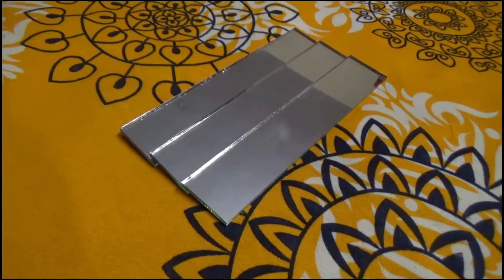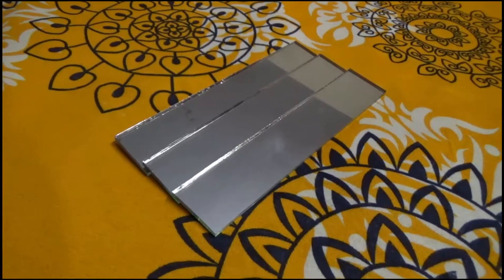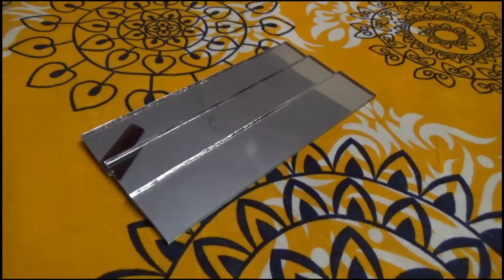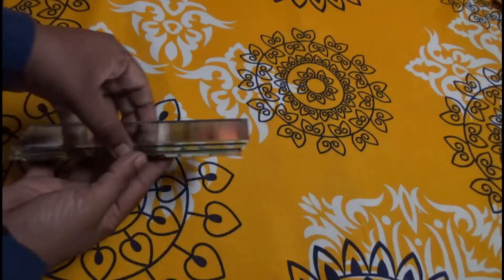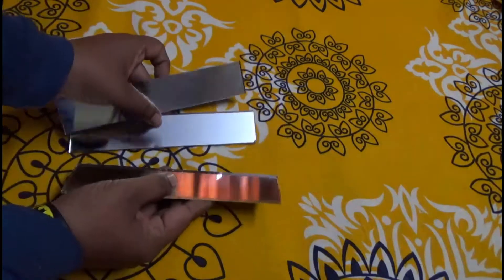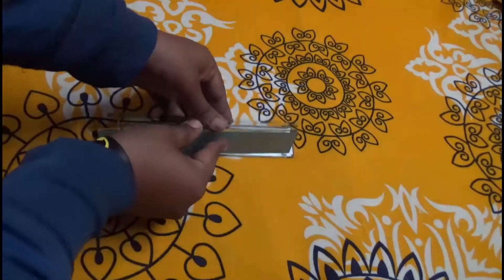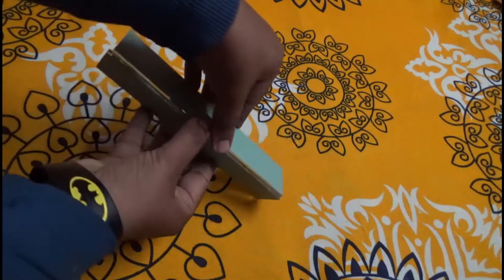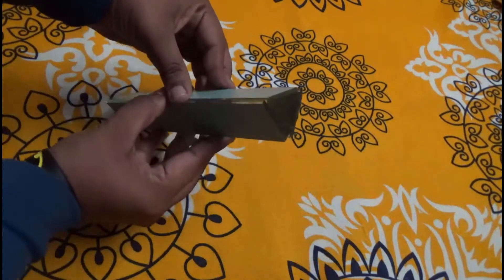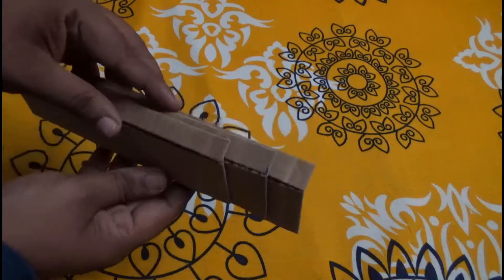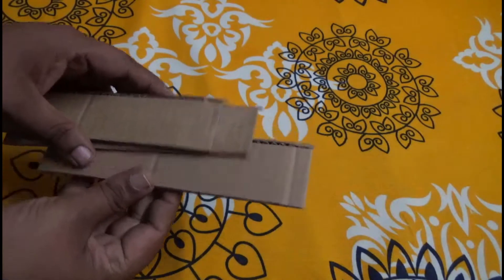For this we need three identical strips of mirror approximately 15 centimeters in length and 4 centimeters wide. We are going to arrange these mirrors in an equilateral triangle.